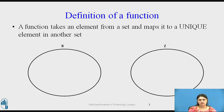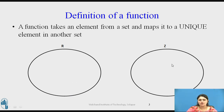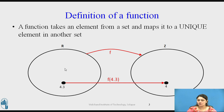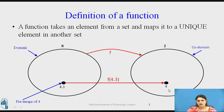A function takes an element from a set and maps it to a unique element in another set. Suppose you have a set R and another set Z, and you want to map the element from this set to this set — that is possible with the help of a function. Suppose you have element 4.3 in set R and element 4 in set Z; you map 4.3 to 4. The elements present in R are called the domain and elements present in set Z are called the co-domain. 4.3 is the pre-image of 4, and 4 is the image of 4.3.